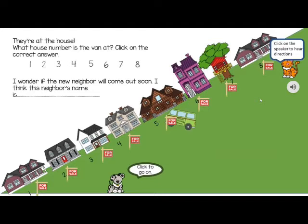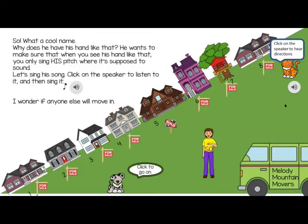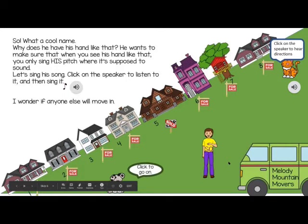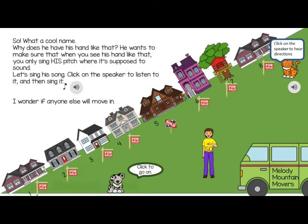As the house gets closer, the student gets to guess the house number where the van first lands. The new neighbor is introduced as Sol, and the graphic for Sol shows the Curwen hand signs, so that if your child or student is learning from home they will still be able to see that.